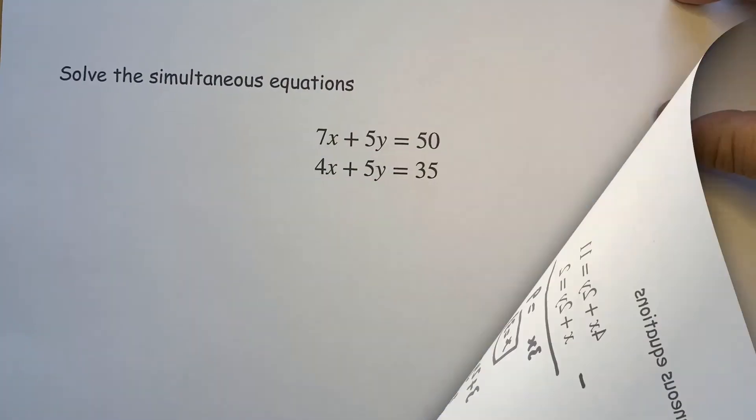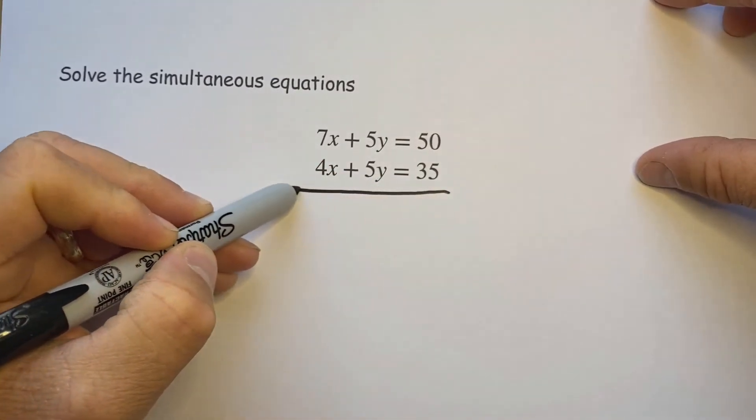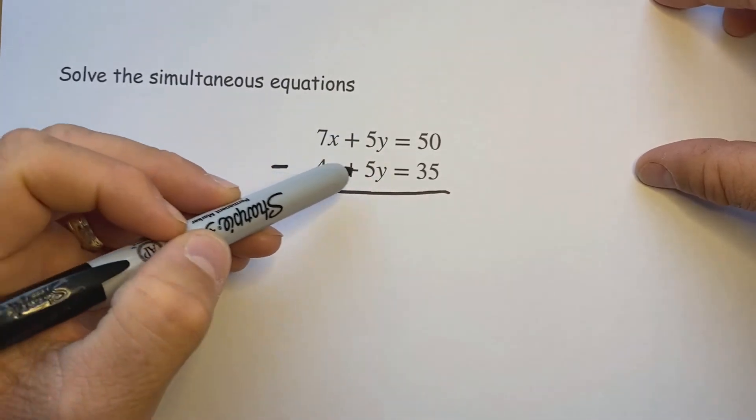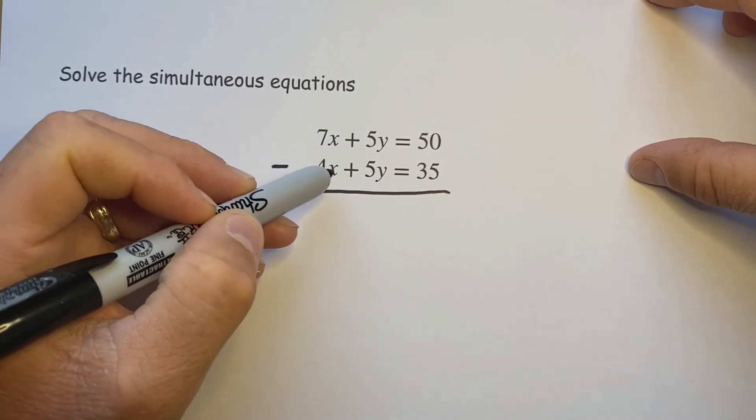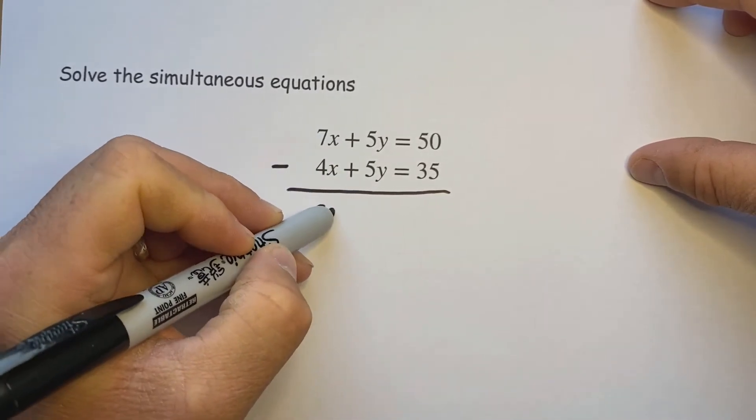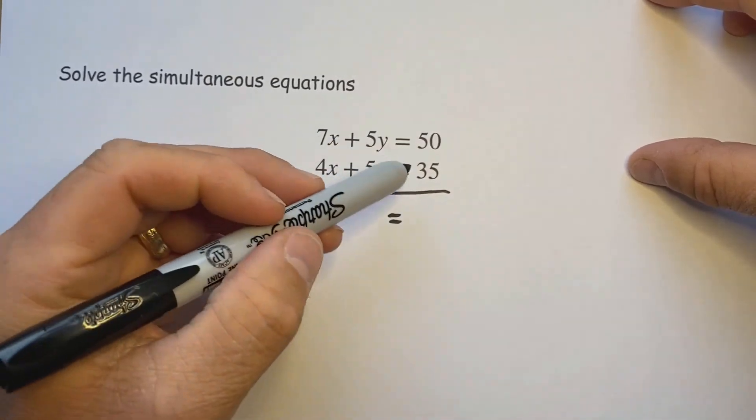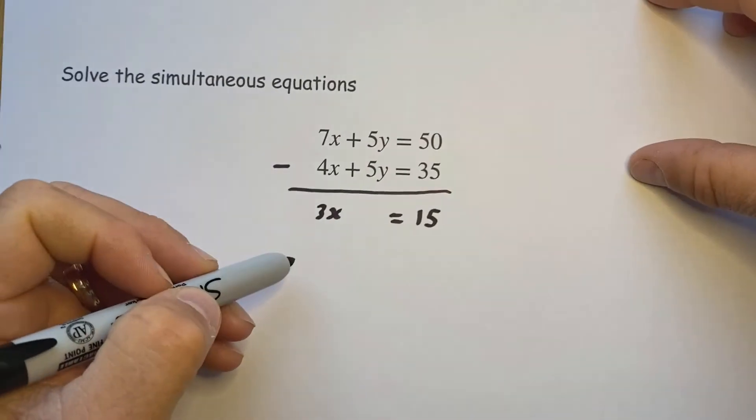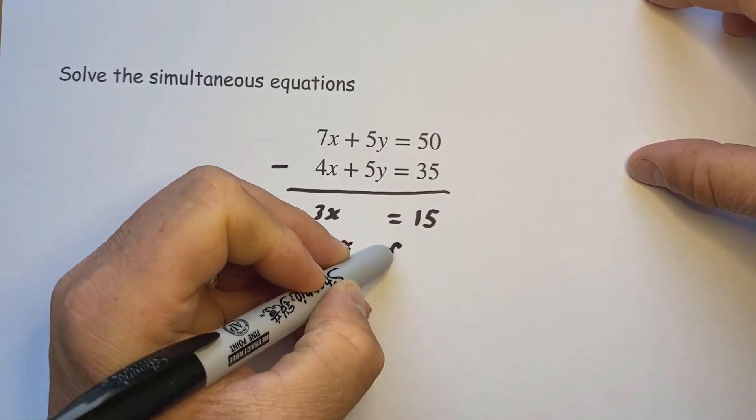Okay, third one, same sort of pattern here. We can eliminate the letter y by subtracting them because 5y take 5y is nothing. However, 7x take 4x is 3x, 50 take 35 is 15. So if 3x is equal to 15 then x is equal to 5.